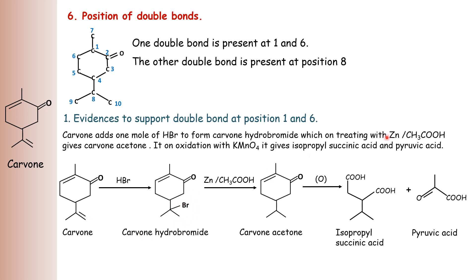That product is then treated with zinc in acetic acid and gives carvone acetone. That carvone acetone upon oxidation with potassium permanganate gives the products isopropyl succinic acid and pyruvic acid. The oxidative degradation takes place at this double bond and formation of isopropyl succinic acid and pyruvic acid indicates there is a double bond between positions 1 and 6. These are the evidences to support the double bond at position 1 and 6.